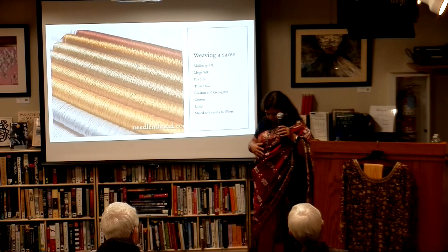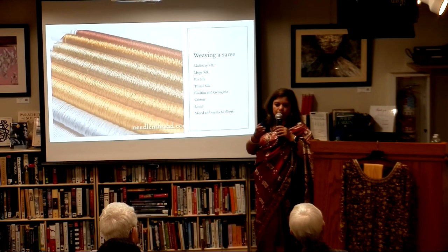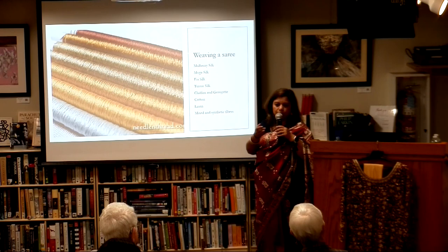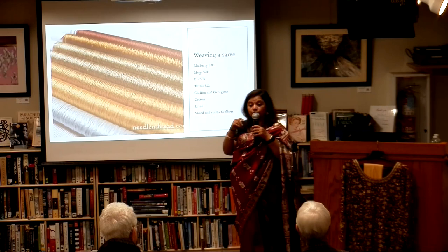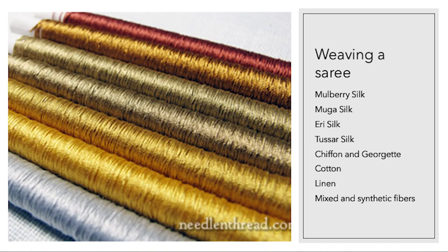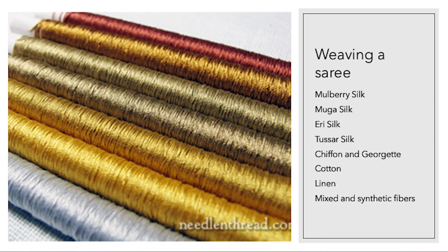Mulberry silk is very lustrous and smooth, whereas tassar is very coarse and rough — the type of worm determines the silk's character. There is also finishing involved that changes the result. Chiffon and georgette are also silks — just a different type of twisting and weaving makes the fiber crinkled to create those fabrics. Then there is everybody's favorite fiber, cotton, and linen, which is also made in abundance in India, though linen sarees are a more recent development.